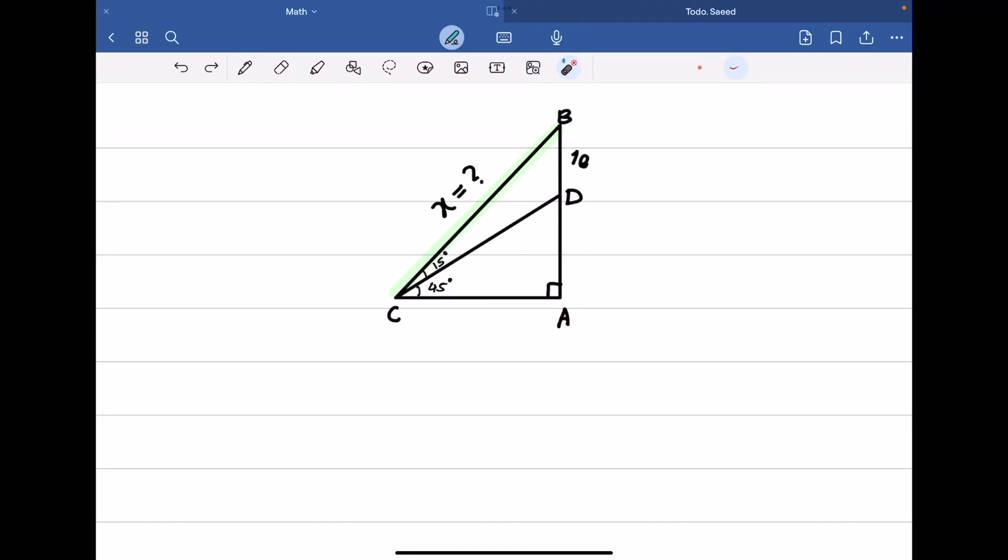Right triangle ABC is given with known angles and the length of BD. The problem asks for the length of BC.